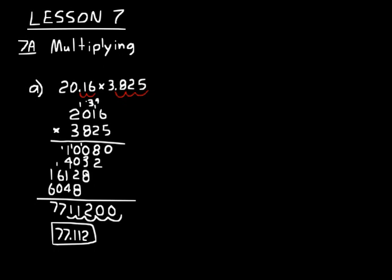Don't forget on multiplication: you count up the total number of decimal places, move them out, do your multiplication with whole numbers, then add them back in at the end. In reality, 20.16 was multiplied by 100 to move the two decimal places over, and 3.825 was multiplied by 1,000. So you really ended up multiplying by 100 times 1,000, or 100,000 — that's five tens. Then you divide back through by 100,000 to get your correct answer with the correct decimal places.